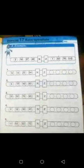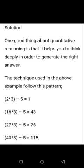Then the third number on the left, which is 27, you say 27 times 3 and that should give you 81. So 81 minus 5 will give you 76.